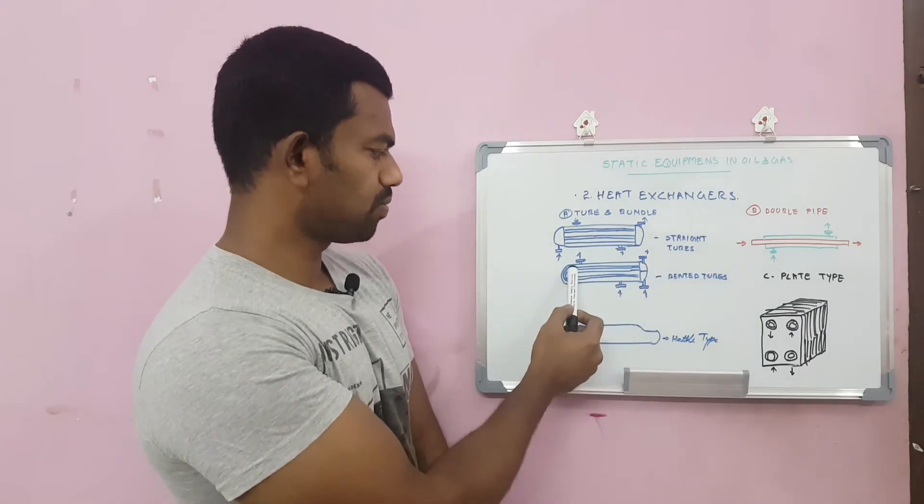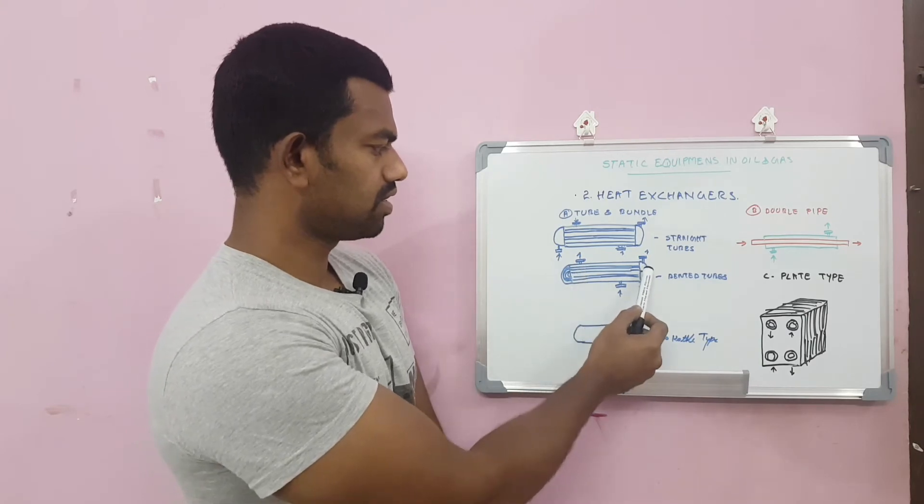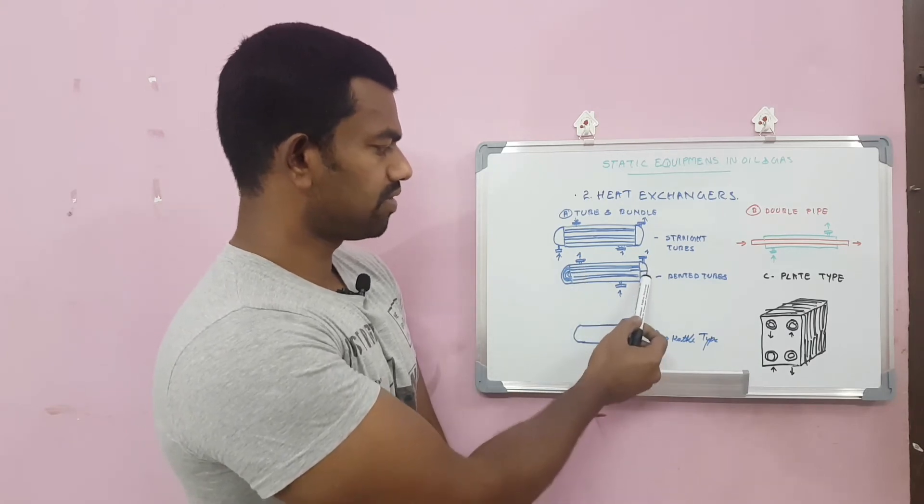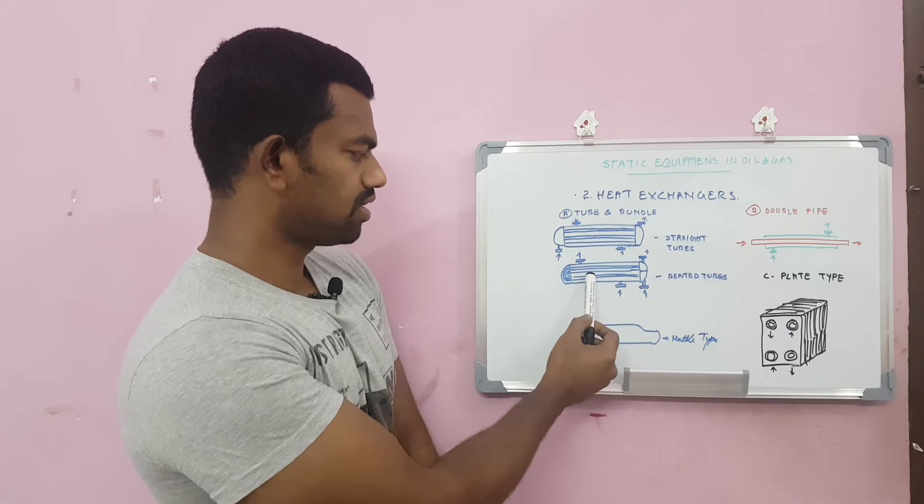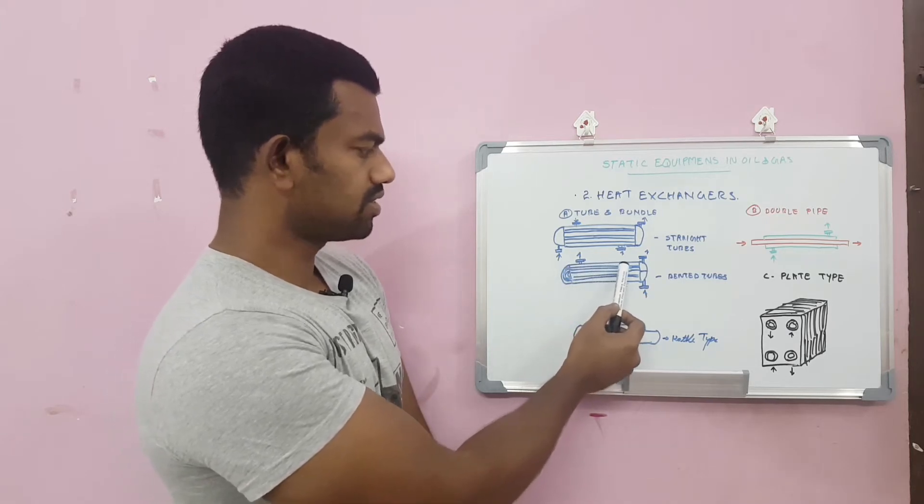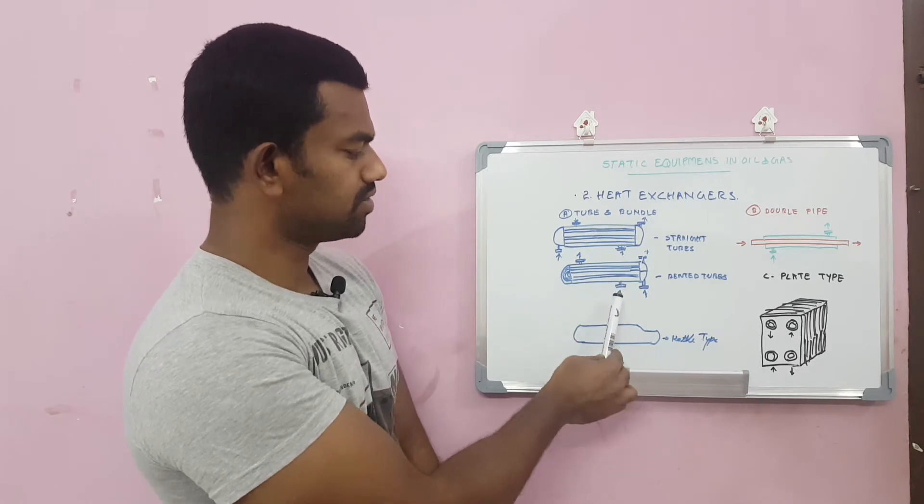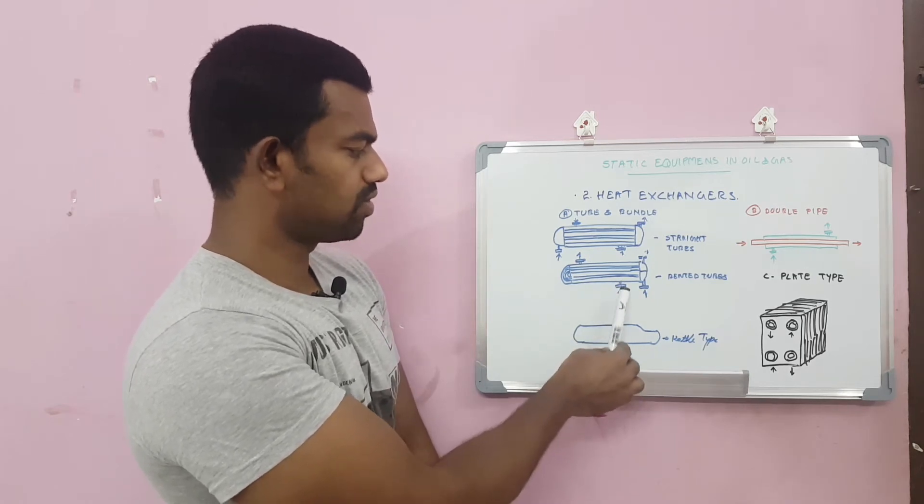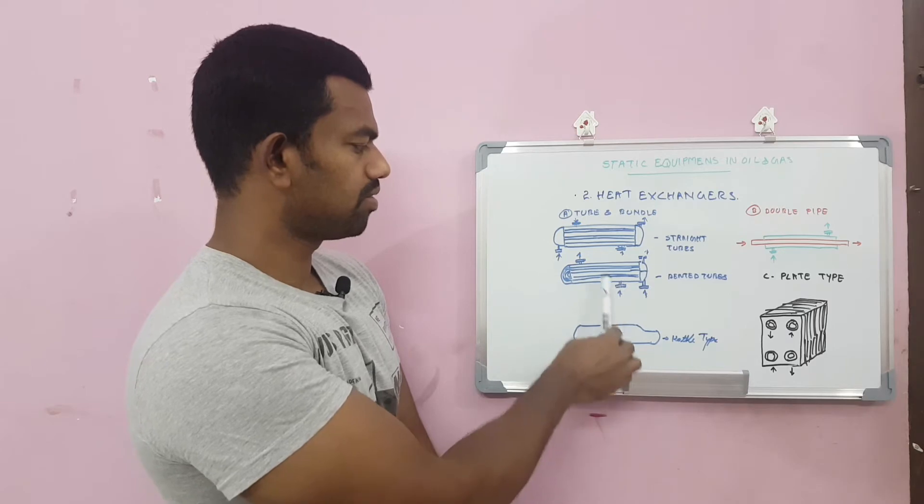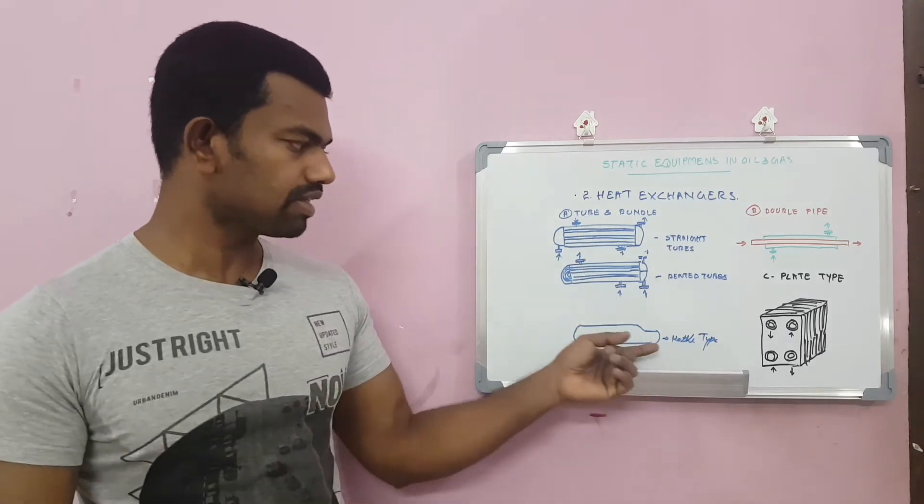Second is bender tubes. This portion will be separated once it is entered from here. This will be transferred and go out. Meantime, the cooling, the other essential liquids will be either liquids or gas. It will be entered from here and going out. There is a kettle type.